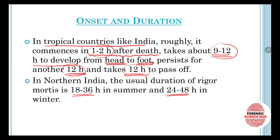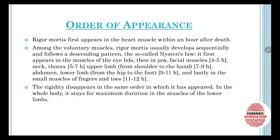Regarding the order of appearance, rigor mortis first appears in the heart muscles — this is for involuntary muscles — within an hour after death. For voluntary muscles, rigor mortis develops sequentially and follows a descending pattern according to Nisten's Law.